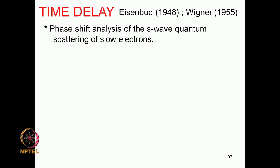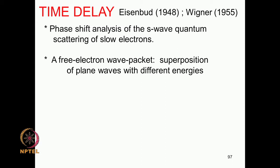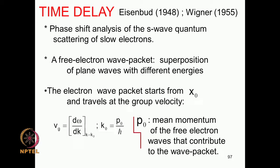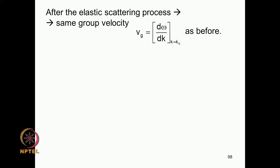I will now turn to time delay in scattering, which comes from the analysis of Wigner and Eisenbud. The original analysis came in the context of phase shift analysis of s-wave scattering at low energies. Typically, a free electron wave packet is a superposition of plane waves traveling at a group velocity d ω/dk. There is a mean momentum p₀ corresponding to wave vector k₀.